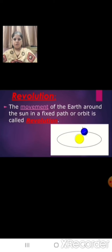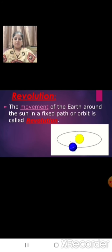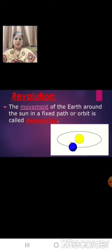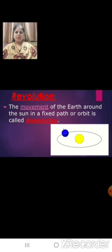What is revolution? The movement of the earth around the sun in a fixed path or orbit is called revolution. Here you can see the earth is revolving around the sun, so this movement is called revolution. The imaginary path on which the earth moves around the sun is called its orbit.